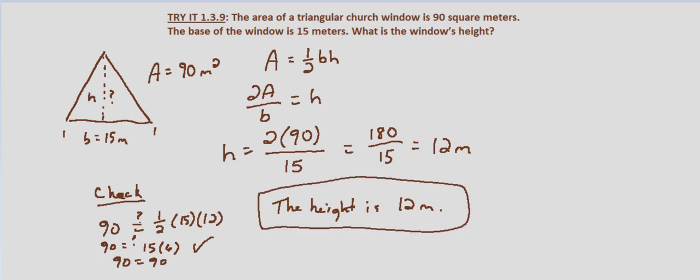And note that we could have done this simply by substituting into the formula first and then solving for the height. So let's do it that way just so you can see. 90 equals one half times 15 times the height.